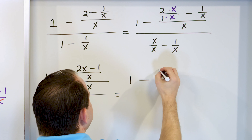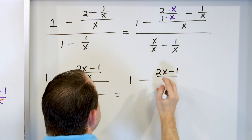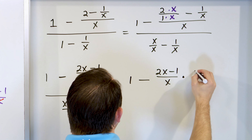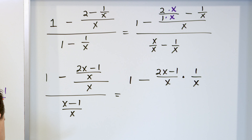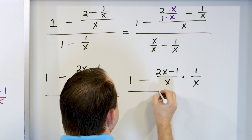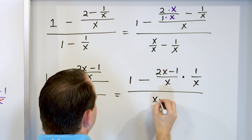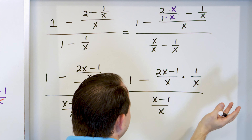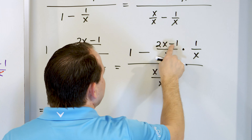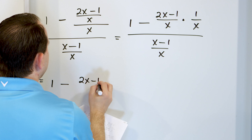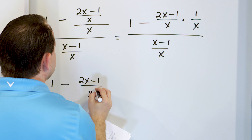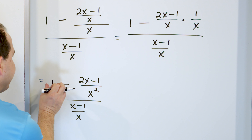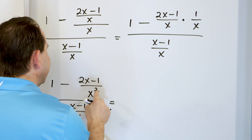Ignoring the outer parts, we have a fraction divided by x, which is x over 1. So we change division to multiplication and flip: (2x-1)/x times 1/x equals (2x-1)/x². Things are starting to look simpler. Now we have 1 minus (2x-1)/x² on top, and (x-1)/x on the bottom. We need a common denominator of x² to handle the subtraction, writing 1 as x²/x².